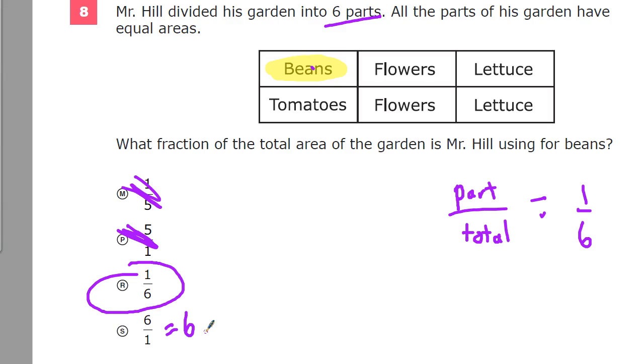1 sixth is the only answer that makes any logical sense. Now, what could they have asked that would have been very annoying, but I wouldn't put it past them? What if they had said, what fraction of the total area of the garden is not being used for beans? So if it was not, you would pick the other ones.